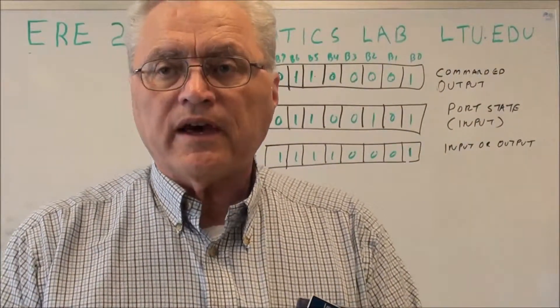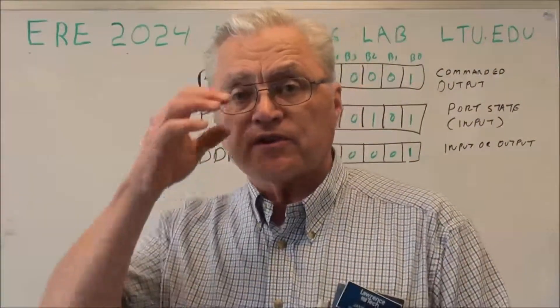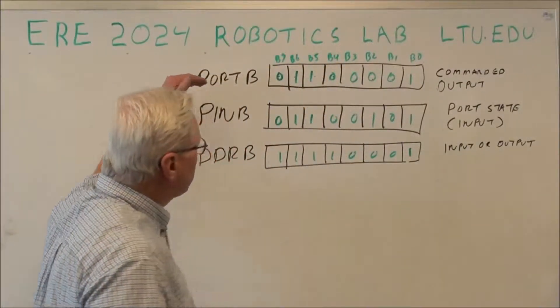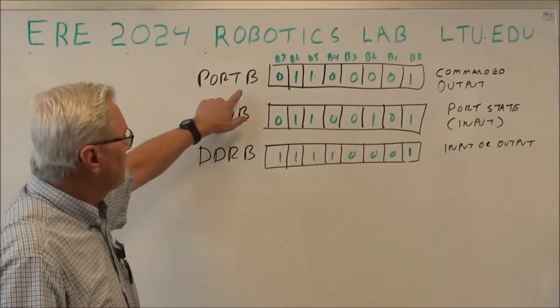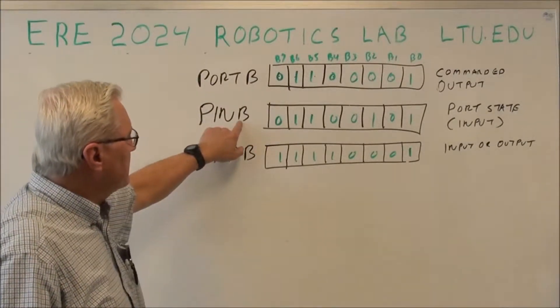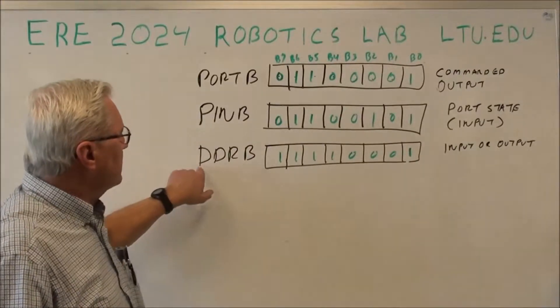So to do that, each port has a number of registers associated with it. There is PORTA, B, C, D, and I'm using B for an example. There's PINA, B, C, D, and a DDR for data direction register.